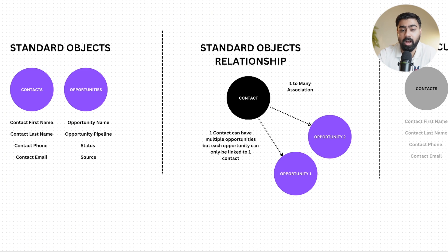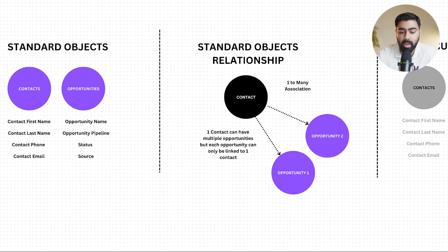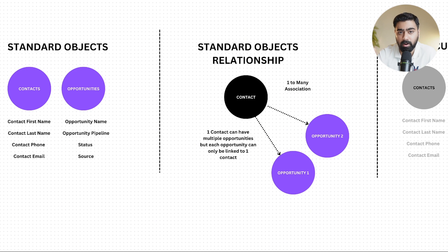Having objects is really beneficial because it opens up the ability to have an extended database and create more associations at one given time. These were standard objects, system-generated by Go High Level and present in every account. Now let's say we want to convert Go High Level into a CRM for a car dealership, a restaurant, or a real estate business. To really modify it and take it to the next level, we need to create custom objects like property or a car.